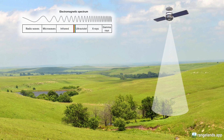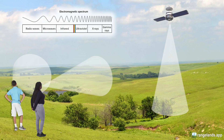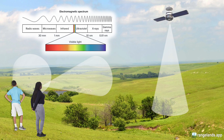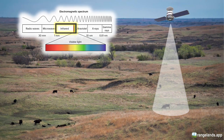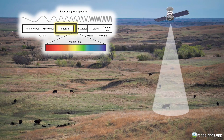Range Sense measures different portions of the electromagnetic spectrum, which each provide different types of information about the environment. As humans, we're most familiar with just one part of the electromagnetic spectrum — our eyes sense visible light in the form of red, green, and blue energy. Range Sense also measures red, green, and blue light, but goes further by also measuring portions of the infrared energy. By using all these portions of the electromagnetic spectrum, Range Sense can distinguish a healthy green prairie from a field where vegetation is starting to turn brown in the fall.